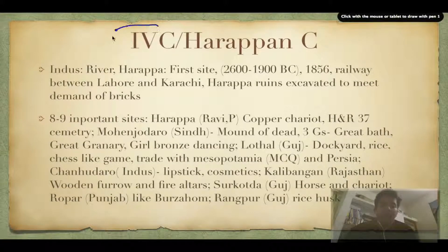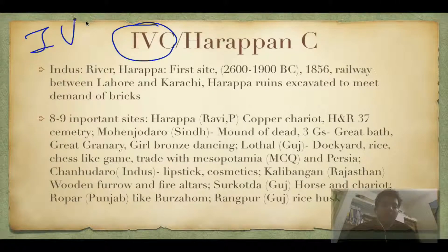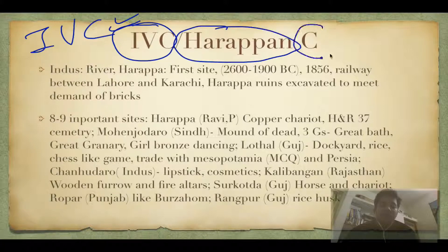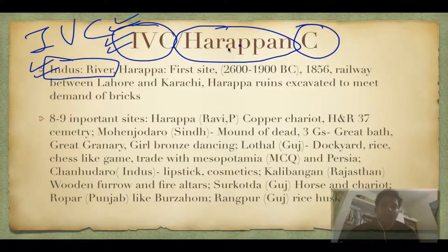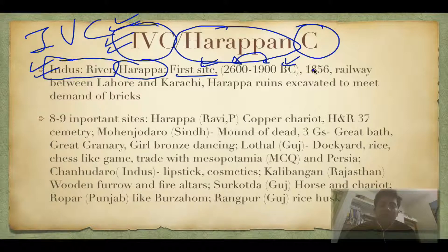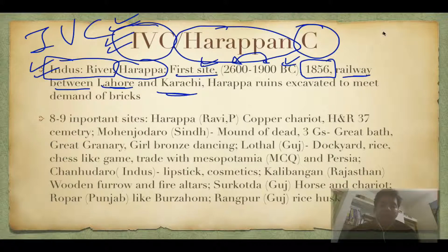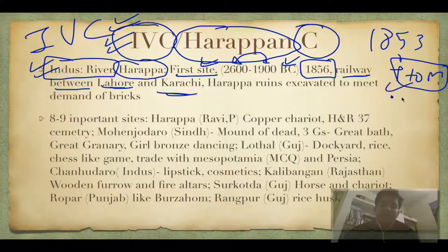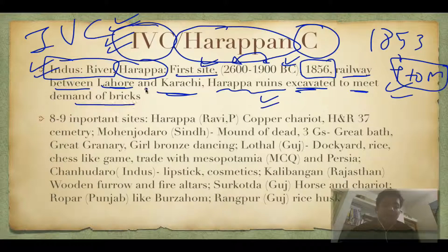IVC stands for Indus Valley Civilization, also called the Harappan Civilization. It is called the Indus Valley Civilization because many sites are along the River Indus. It's called Harappan because Harappa was the first site discovered. It is roughly from 2,600 to 1,900 BC. It was discovered in 1856 when railway lines were being laid between Lahore and Karachi, and Harappa ruins were excavated to meet the demand for bricks.